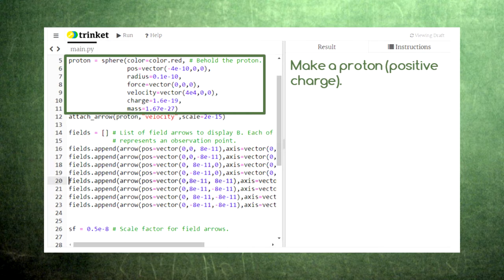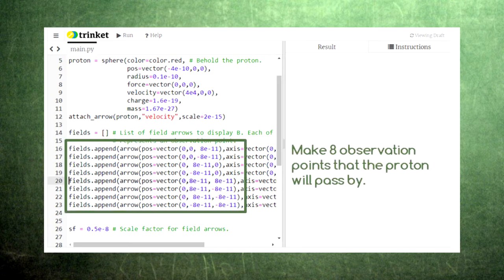Here, we create a single proton which will be the source of our magnetic field as it moves across the screen. Next, we create eight observation points where we'll display the magnetic field vectors.